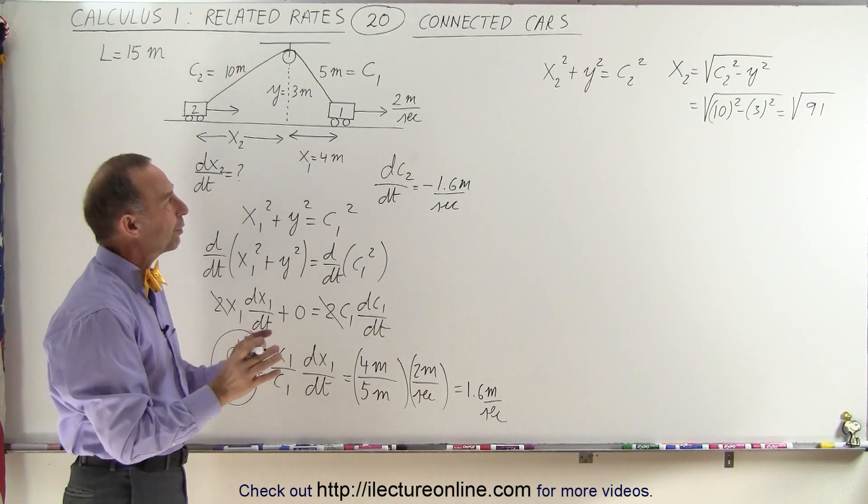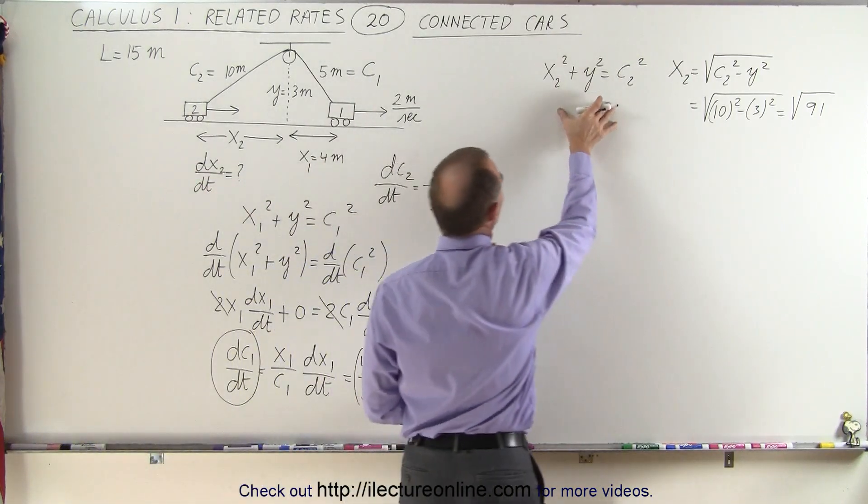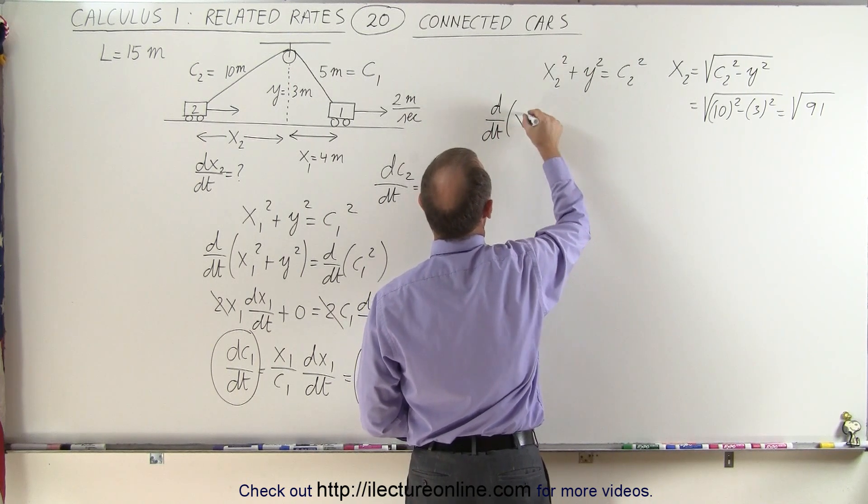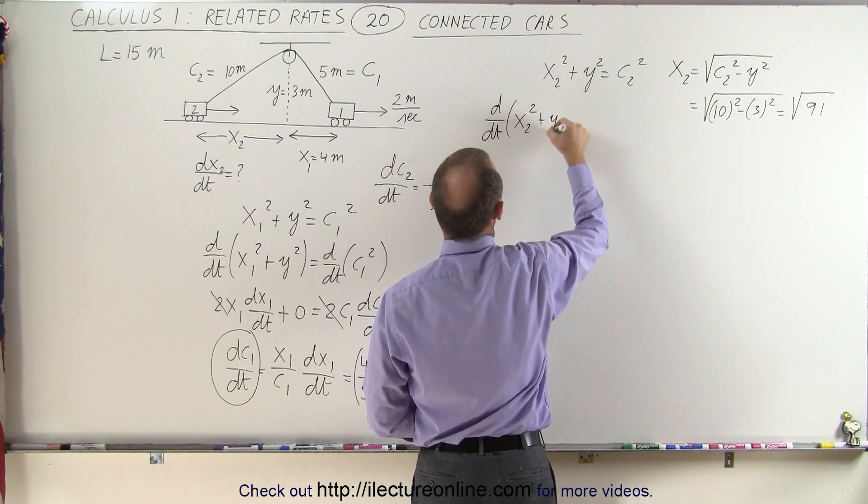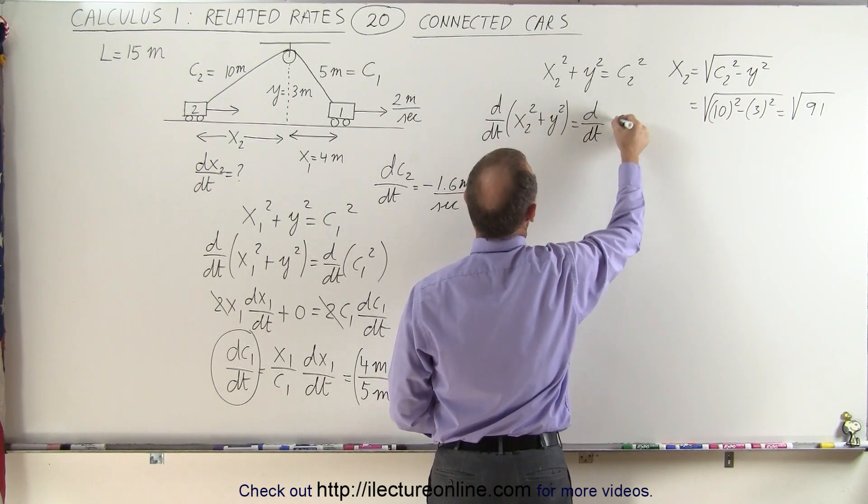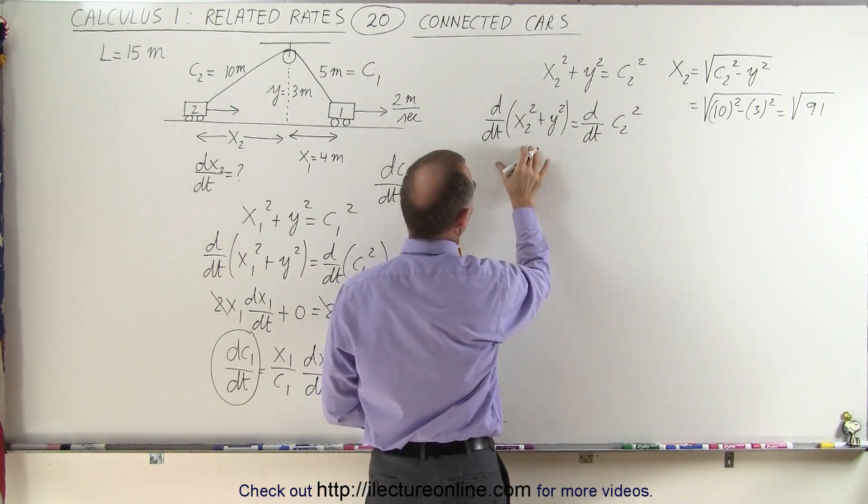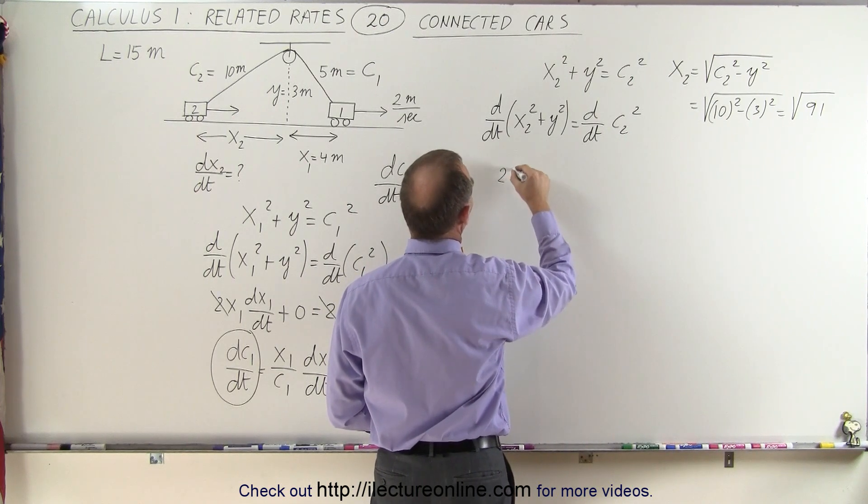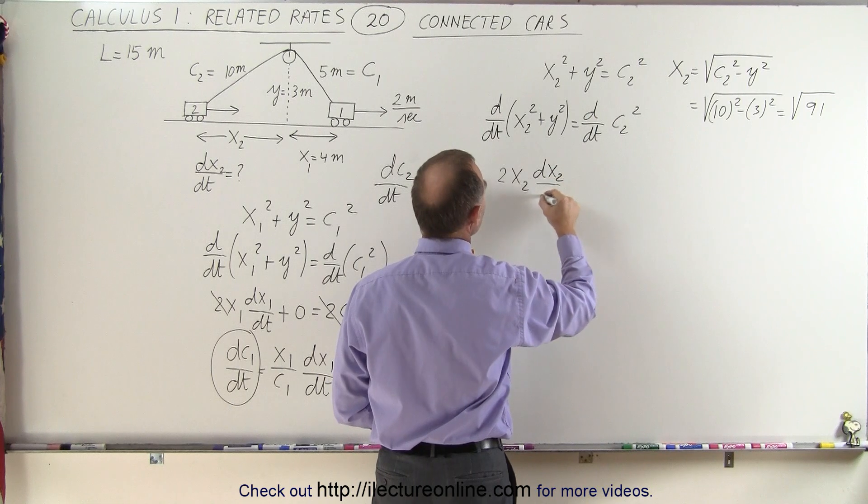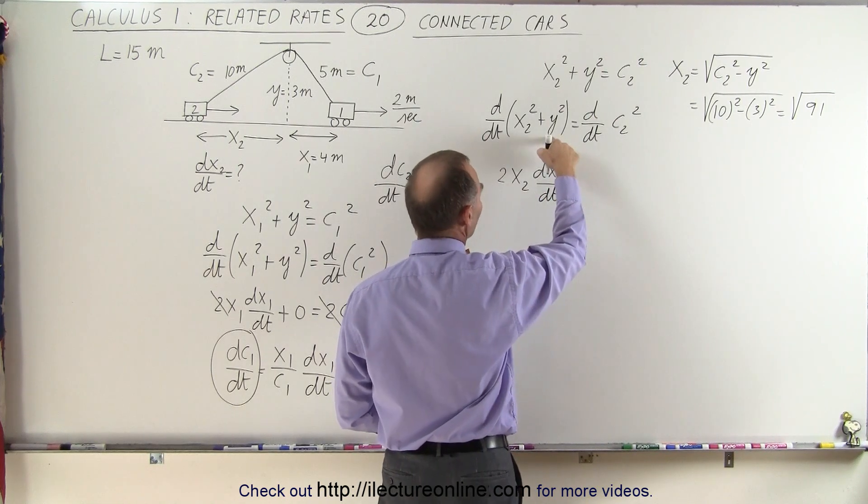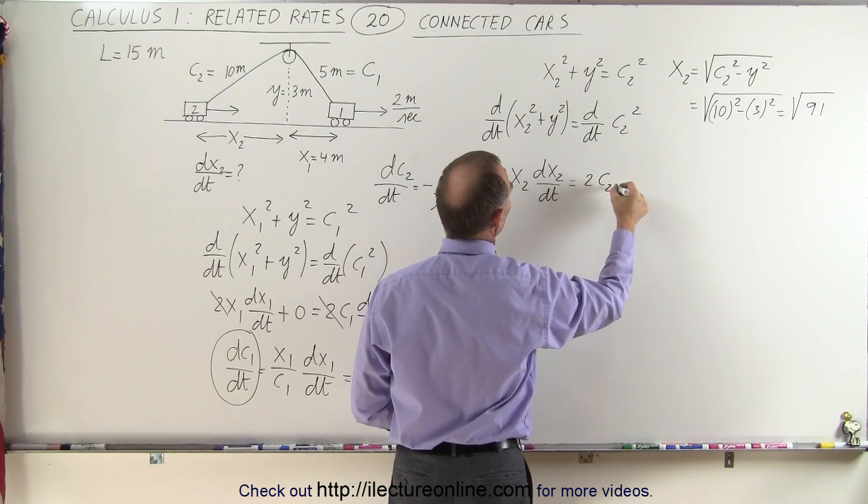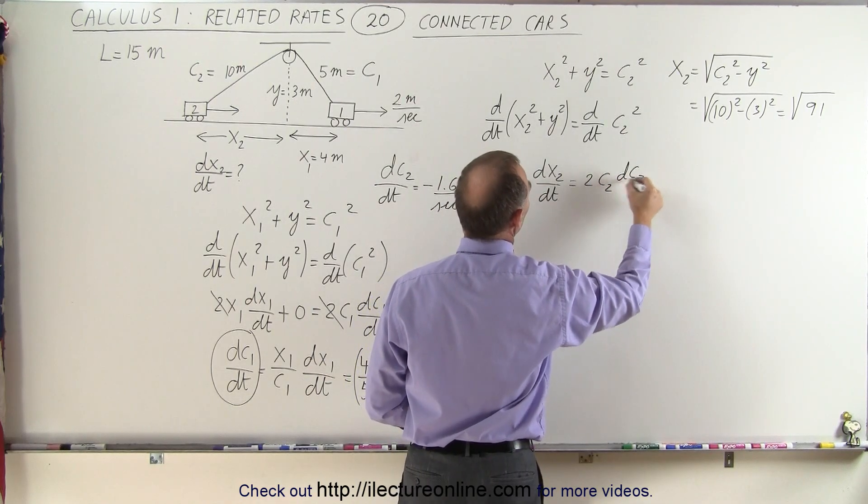Okay, now we can take the derivative with respect to time of this equation. So we'll take the d dt of x2 squared plus y squared and set that equal to the d dt of c2 squared. Again on the left side we get 2x2 times dx2 dt plus 0 because y is constant equals 2c2 times dc2 dt.